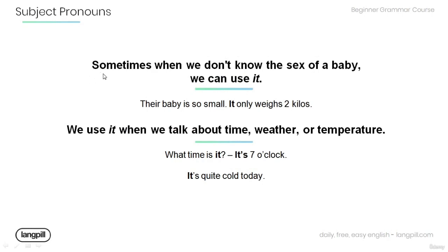Sometimes when we don't know the sex of a baby we can use 'it.' For example: 'Their baby is so small — it only weighs two kilos.'